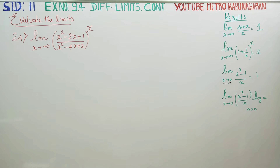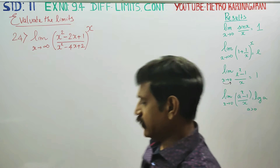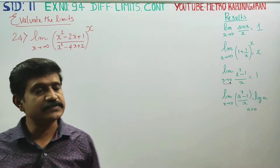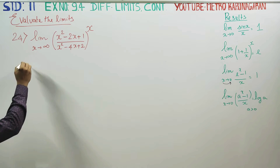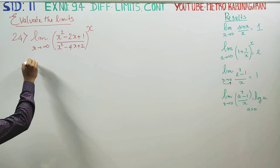Dear 11th standard students, in exercise number 9.4, sum number 24: limit x turns to infinity of (x² - 2x + 1) / (x² - 4x + 2), whole power x. First,